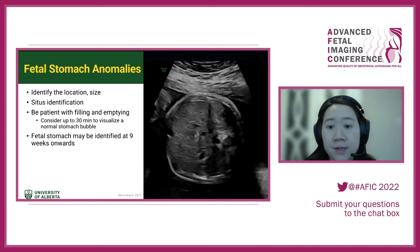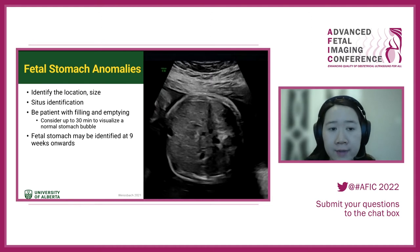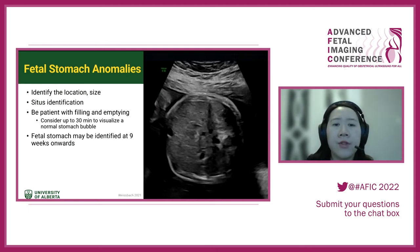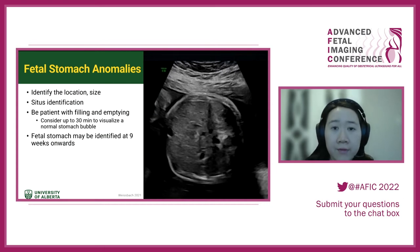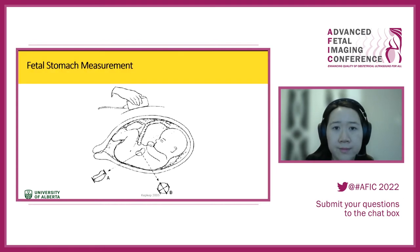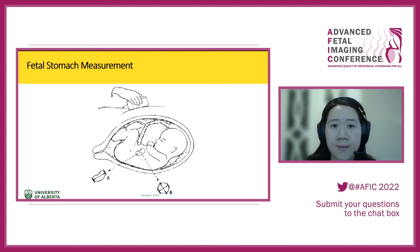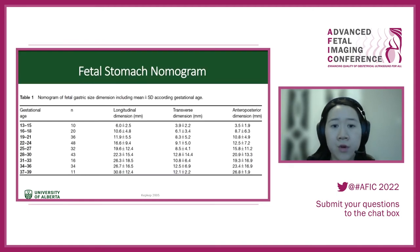With situs identification, also make sure to get enough time to watch for filling and emptying — consider up to 30 minutes to visualize a normal stomach bubble. The fetal stomach can be identified from about nine weeks onwards. Kep's paper looked at normal stomach size measuring in a longitudinal position, transverse, and AP diameter, producing a nomogram for normal fetal stomach size.